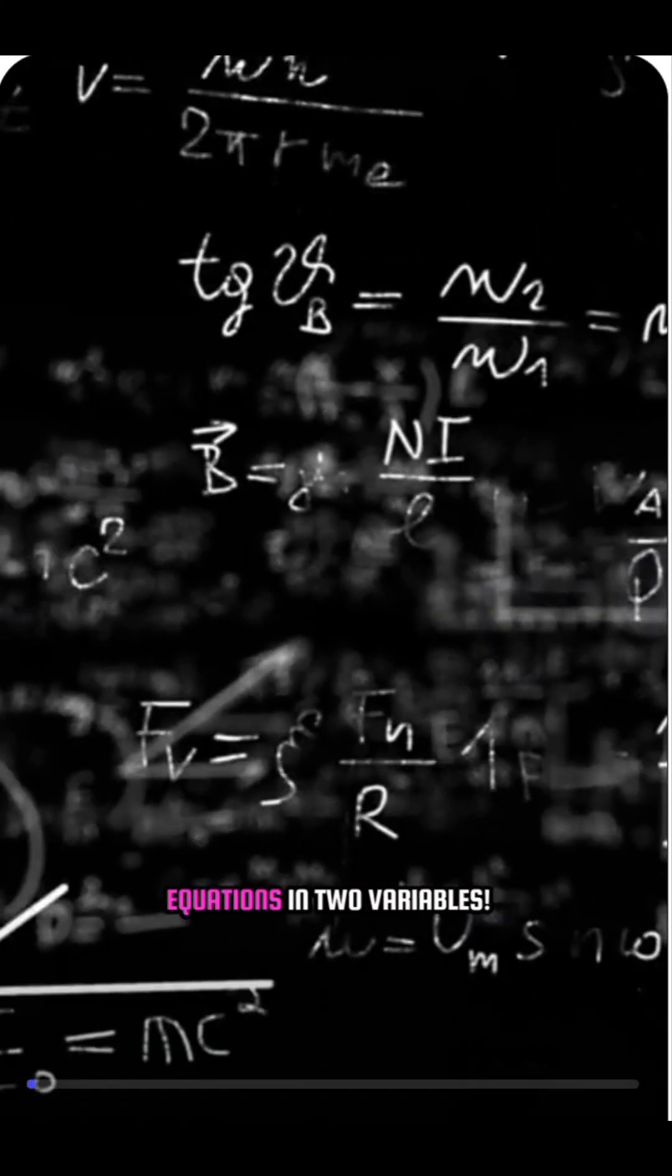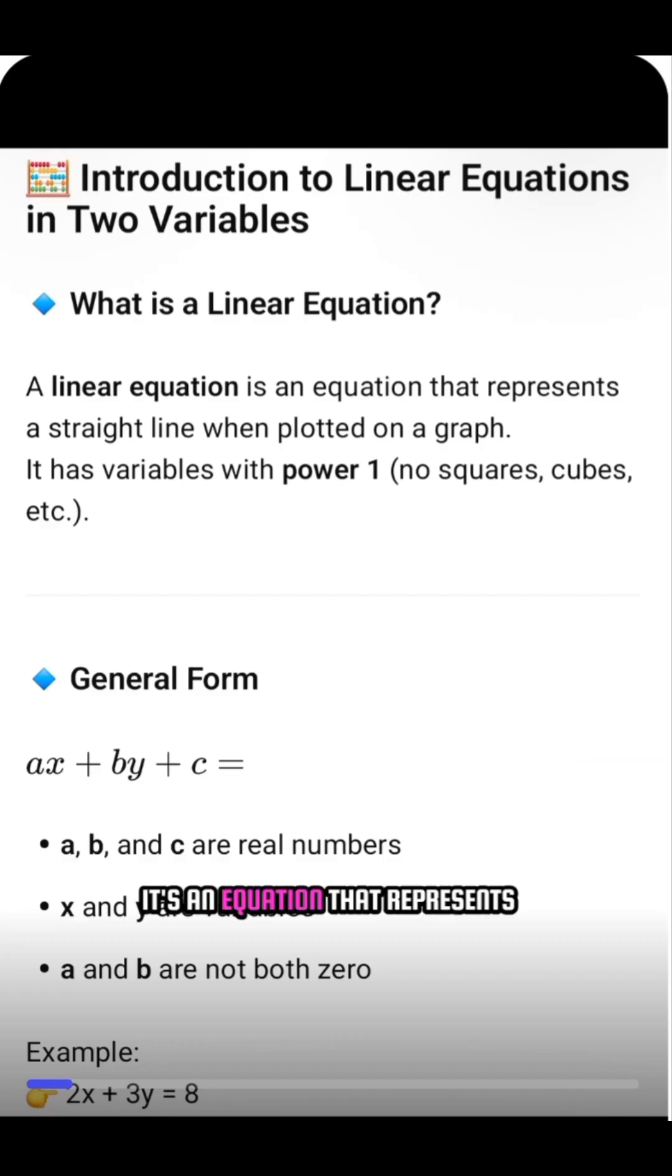Welcome to the world of linear equations in two variables. So, what exactly is a linear equation? It's an equation that represents a straight line on a graph. These equations have variables raised only to the power of 1.